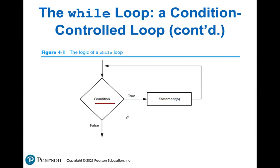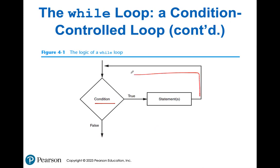We have our condition right here. Everything looks exactly the same as our if decision structure. However, at the end, instead of the arrow going down to the end, the arrow goes up and back to the very beginning of the condition. We test a condition; if true, we perform some code, then come back and check again. This loop keeps going until the condition inside the diamond is false, then we exit the loop and carry on with the rest of our program.